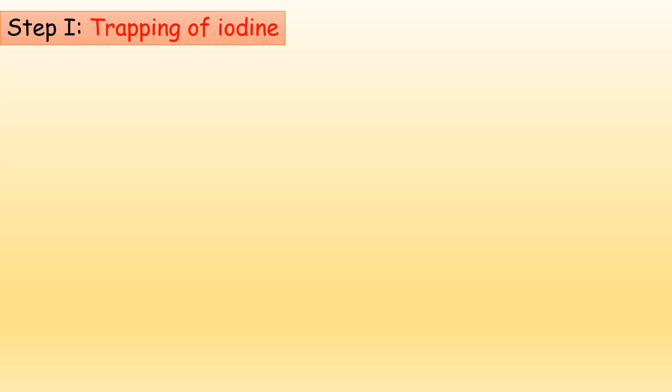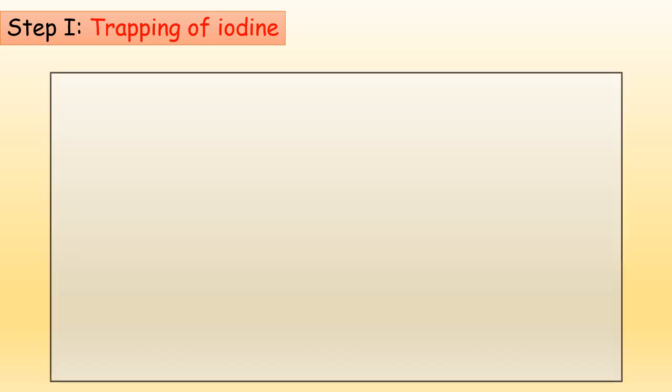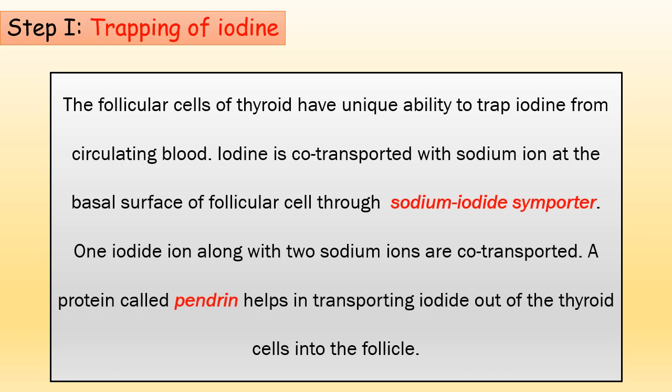In the first step of biosynthesis, iodide from the GI tract is taken up by the follicular cells with the help of sodium-iodide symporter. The follicular cells of the thyroid have the unique ability to trap iodine from circulating blood. Iodine is co-transported with sodium ions at the basal surface of the follicular cell — one iodide ion along with two sodium ions. The protein called pendrin helps in transporting iodide out of the thyroid cell into the follicle.